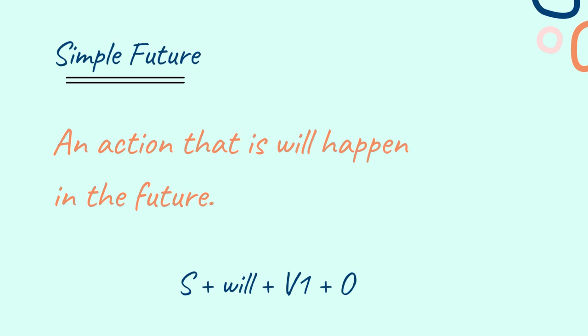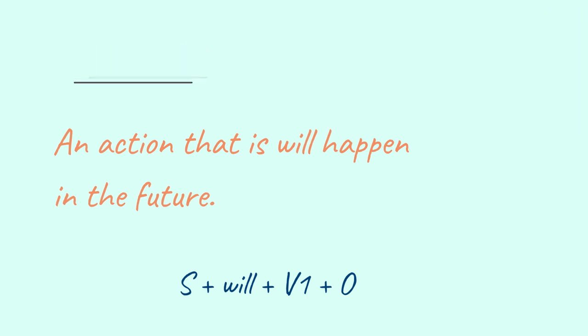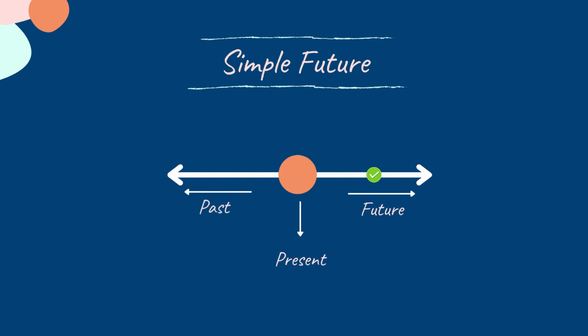What is simple future tense? If an action will happen in the future, then we use simple future tense. The structure of it is subject plus will plus verb's first form plus object. In the timeline, as the action will happen in the future, it is shown by a green tick on the right side of the timeline.